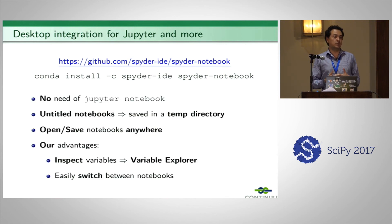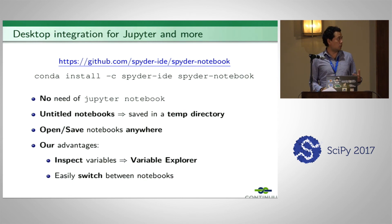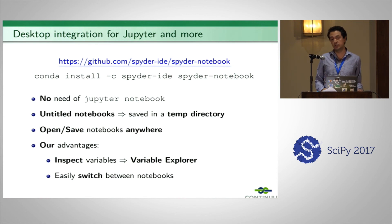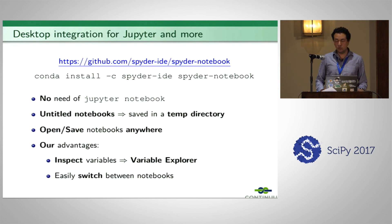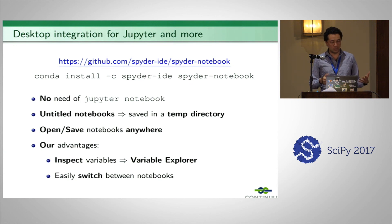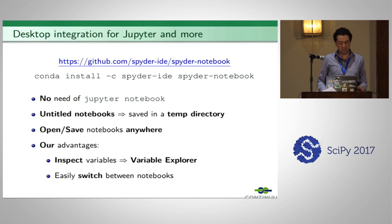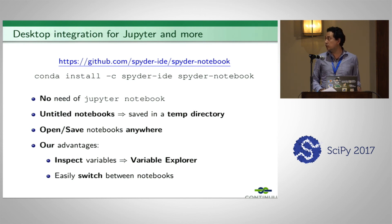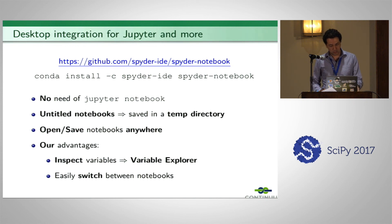The first advantage is that you don't need to run Jupyter notebook in the directory where you want to start a new notebook server. We also provide the functionality that untitled notebooks are saved in a temporary directory so they don't clutter your file system. Third, you can open and save notebooks anywhere in your file system without worrying about opening notebook servers in the right directory. Additionally, you can inspect notebook variables in our variable explorer and easily switch between notebooks using Spyder's file switcher.